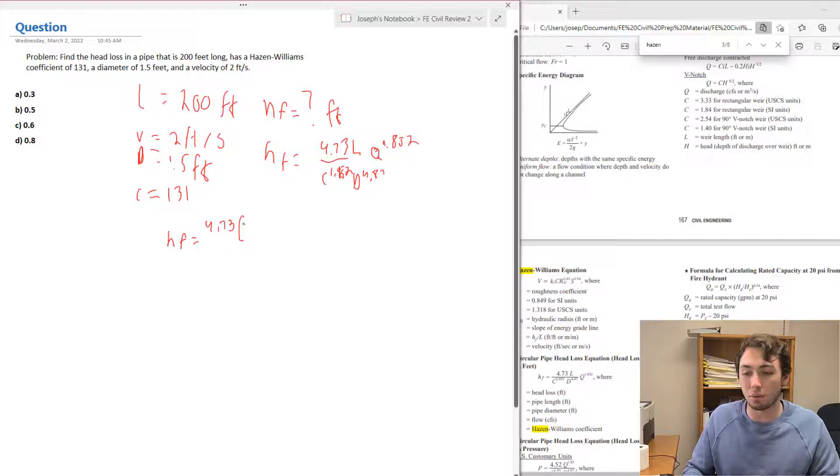...times the length of that pipe which was 200 feet. Q we don't have yet but I'll show you how we can find that. The Hazen-Williams coefficient was 131...